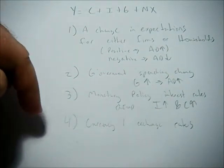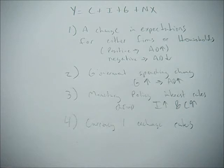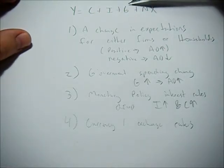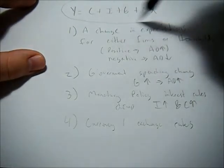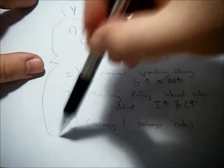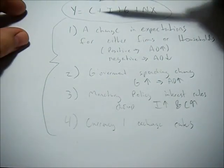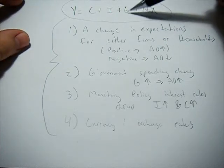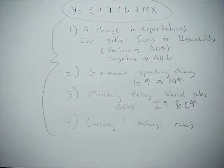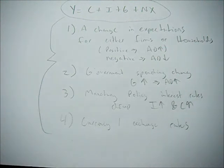If you can keep these main ideas in check and find out which one of these it applies to, then use your intuition. Would I expect C to go up or down or stay the same? I to go up or down or stay the same? G to go up or down? And net exports to go up or down or stay the same? When you get those questions and you're not sure, write out this equation. Try to remember these key principles and just think about it. Is it going to change one of these? If so, which one? And does it go up or down? If it makes it go up, Y goes up, aggregate demand goes up. If it makes it go down, Y goes down, aggregate demand goes down. Good luck.